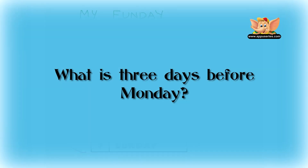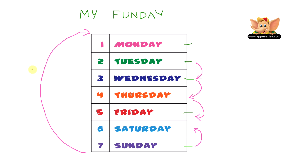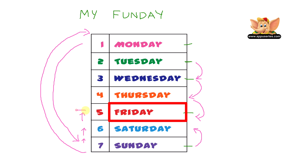Let's see what's three days before Monday. This is kind of tricky. You need to go all the way back down this way and count upwards — that's one, two, and three. So Friday is three days before Monday.